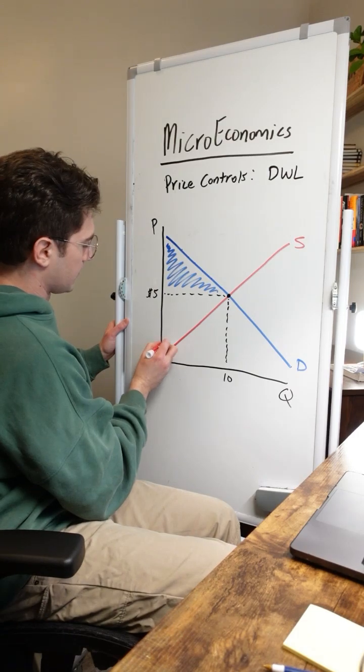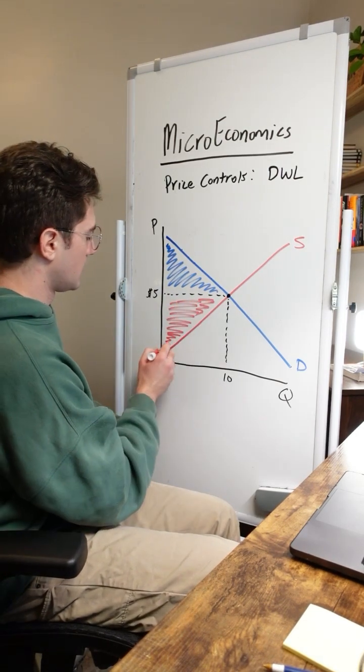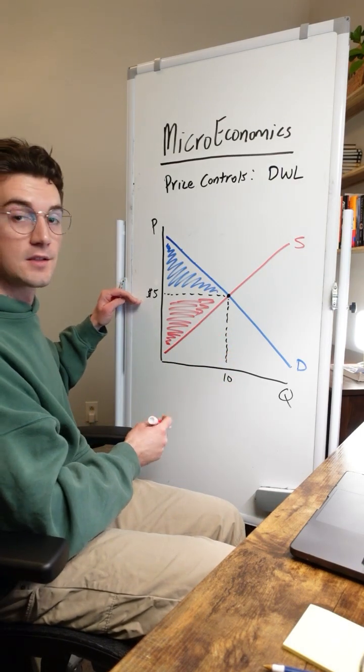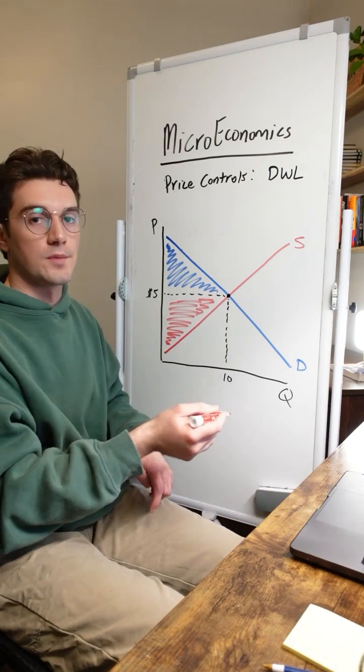And then this red triangle right here will be the producer surplus. Out of these 10 units sold, these producers that lie along the supply curve are willing to sell the good for less than five bucks. So they're getting a deal and making money by selling, equating to this triangle of producer surplus.